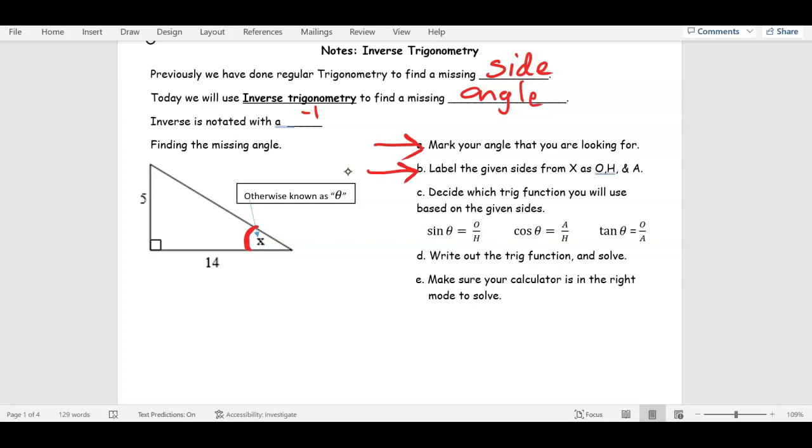Step two, we're going to label O, H, and A. So, what's O going to be? O, H, and A, which one of these has nothing on it? H is nothing, okay? So, let's cross out H.